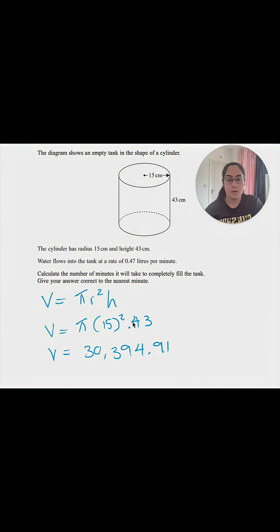Now that's in centimeter cubed. It said that the water flows into the tank at a rate of 0.47 liters per minute, so in order to calculate how many minutes it's going to take, we need to convert this into liters. We know the conversion is 1000 centimeter cubed equals 1 liter. So if we divide this number by 1000, that gives us the volume in liters, and that divided by 1000 equals 30.395 liters.